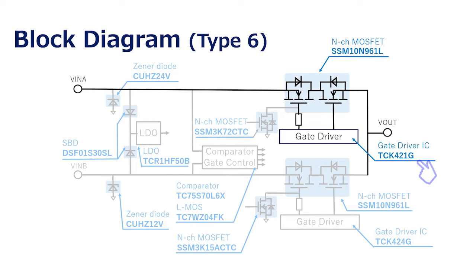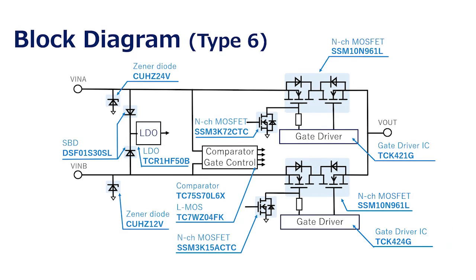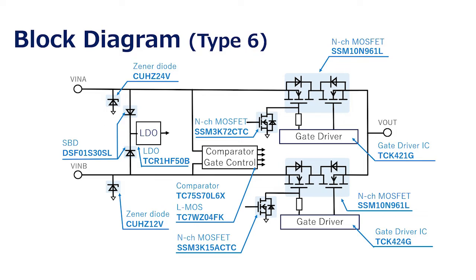TCK421G is the gate driver of the MOSFET for the A-side input switch and it supports input voltage up to 20 volts with a gate drive voltage of 10 volts. TCK424G is the gate driver of the MOSFET for the B-side input switch and it supports input voltage up to 9 volts with a gate drive voltage of 5.6 volts. The gate shutoff MOSFET prevents reverse current flow during switching operation. In addition, various other Toshiba semiconductor devices are also used.